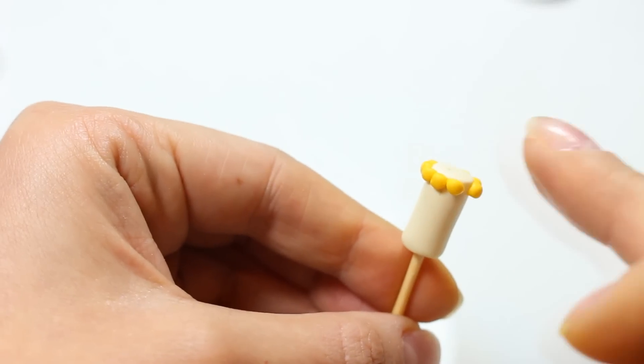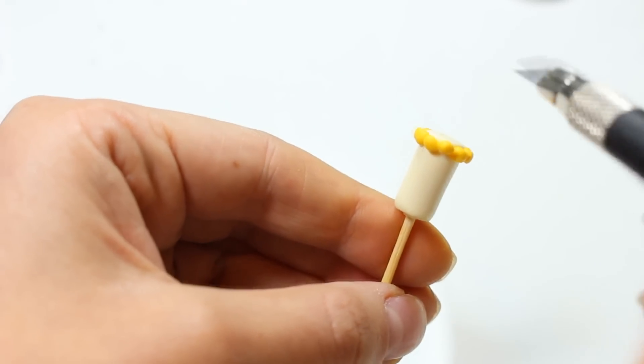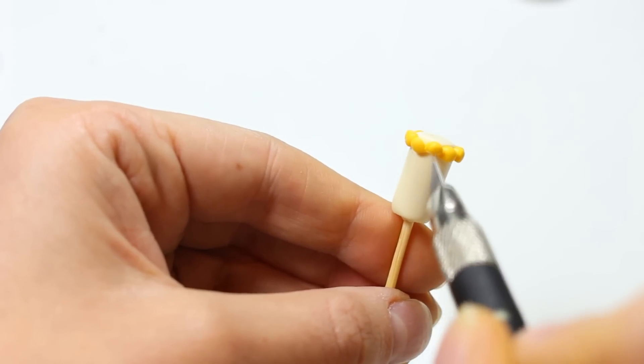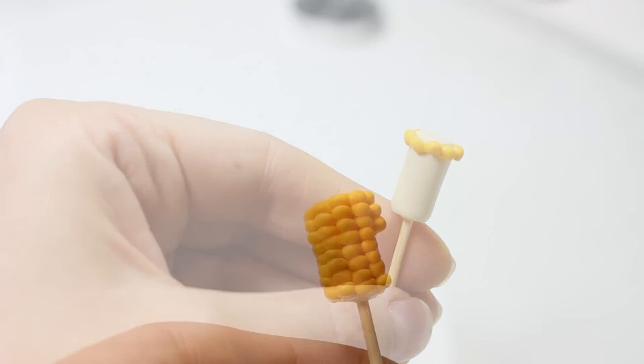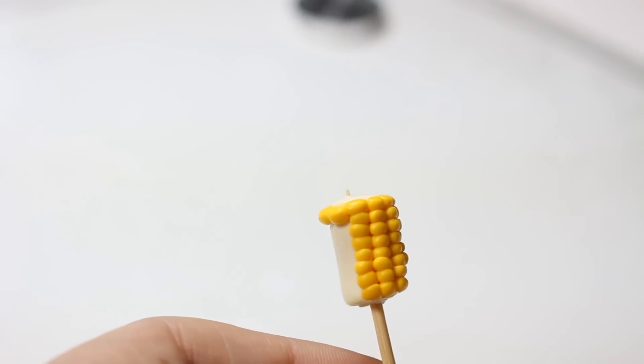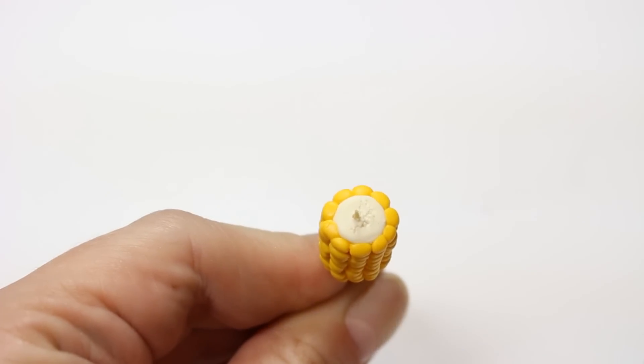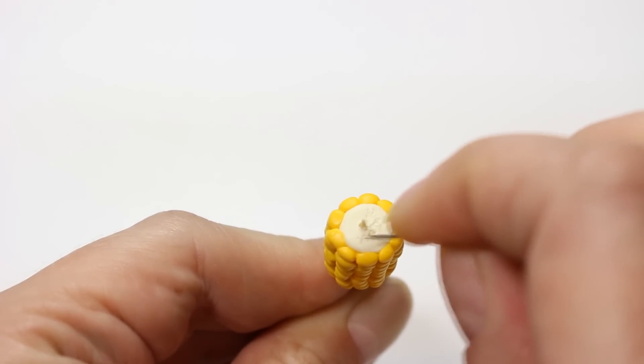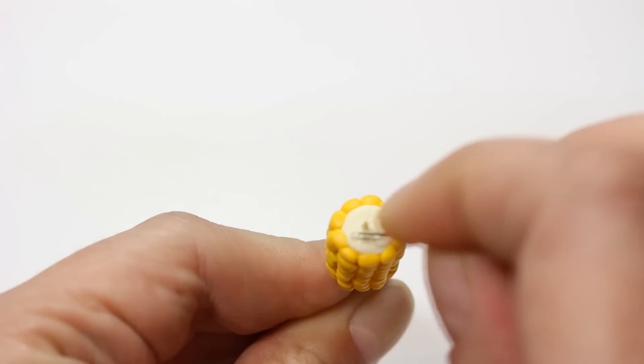Now I'm going to attach them to the already prepared cob using my exacto knife. You want to cover the cob all around with them by creating nice even rows. Remember to be extra careful not to deform them while attaching. Here I'm using a needle tool to texture both top and the bottom of my corn cob.